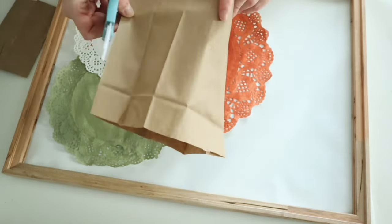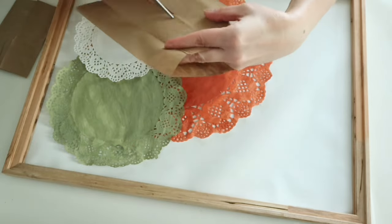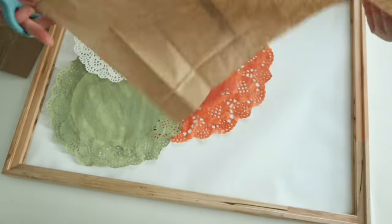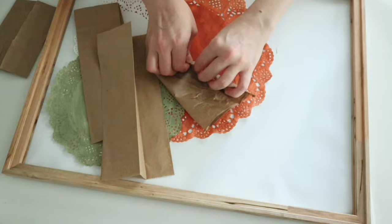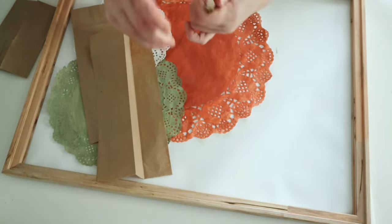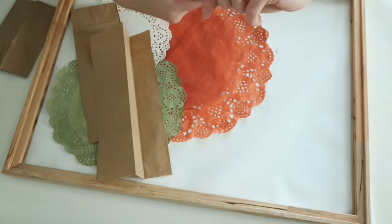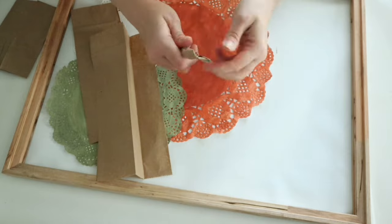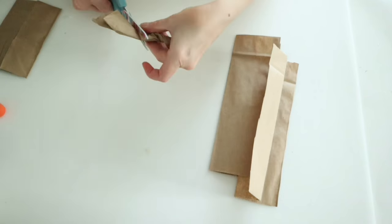Now for the stems of the pumpkins, I'm just using some paper bags that I got from Dollar Tree. I'm just going to cut those down and kind of fold them over and start twisting the top. Just leave the bottom part a little wider and you can twist these and turn them however you want.